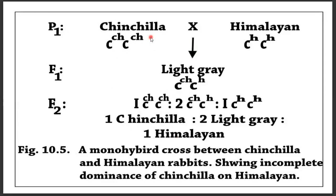The next cross is between chinchilla and Himalayan rabbit. The F1 generation is light grey, because there is a heterozygous combination of the chinchilla and Himalayan allele, showing incomplete dominance of chinchilla over the Himalayan allele. The F2 generation gives a ratio of 1 chinchilla, 2 light grey, and 1 Himalayan.